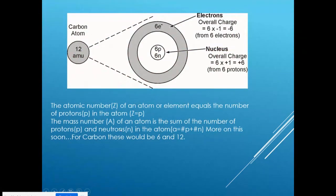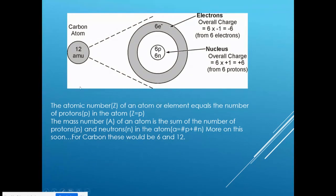I recommend printing out the periodic tables from course content — there should be a standard periodic table and a periodic table of ions. With a periodic table handy, you can look up carbon and see it has an atomic number of 6 and an atomic mass of 12. In atomic notation, A (mass number) is the upper-left value, Z (atomic number) is the lower-left, X is the element symbol, and any charge is shown upper-right. A neutral atom has no charge listed.